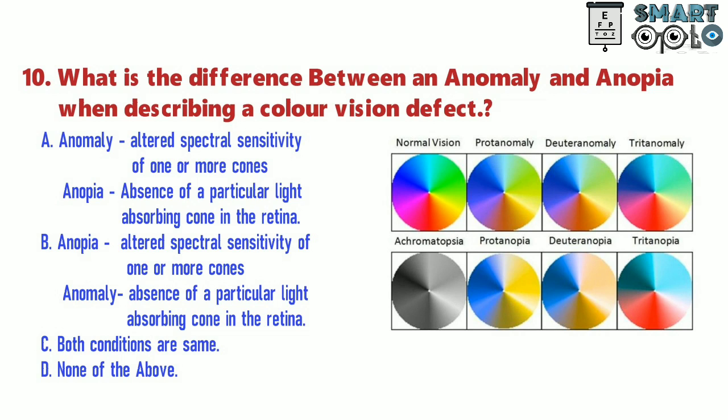B. Anopia: altered spectral sensitivity of one or more cones; anomaly: absence of a particular light-absorbing cone in the retina. C. Both conditions are the same. D. None of the above.